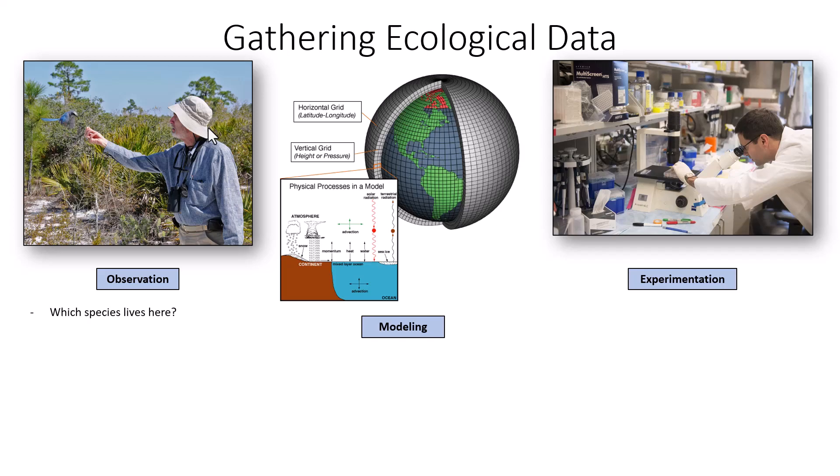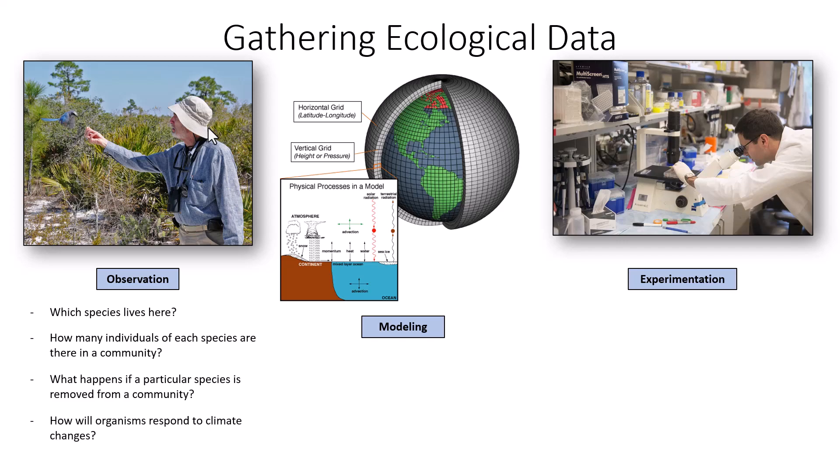Some of those research questions that come about as a result of observations could be, for example: Which species lives here? How many individuals of each species are there in a community? How big is the population in this area? What happens if a particular species is removed from a community — is it a keystone species with incredible ramifications for the environment? How will organisms respond to climate change? These are observation-based research questions.